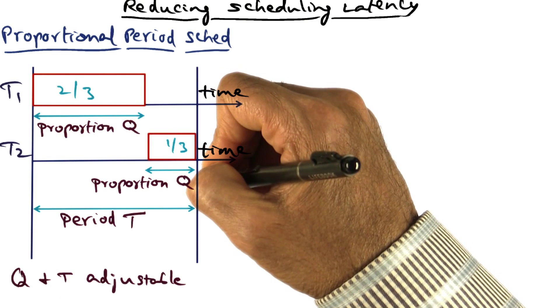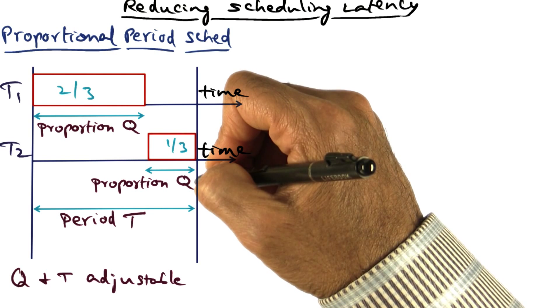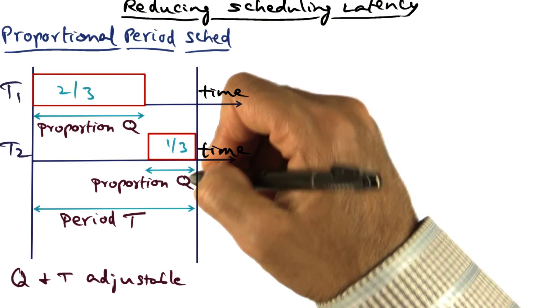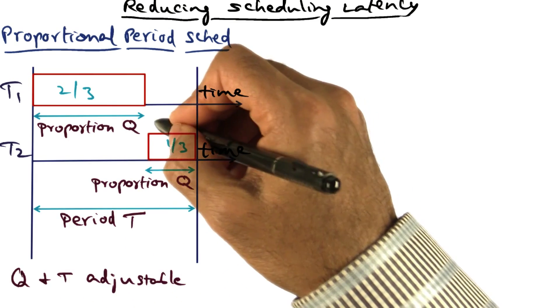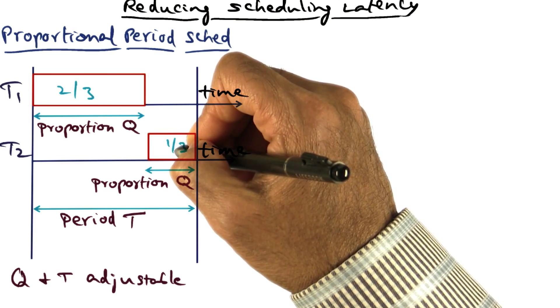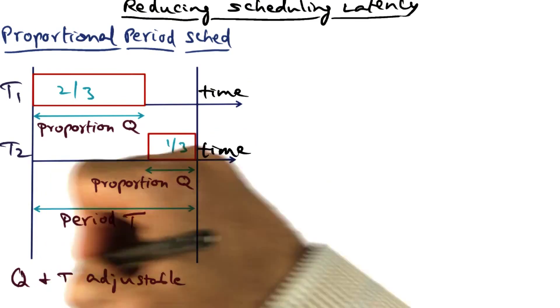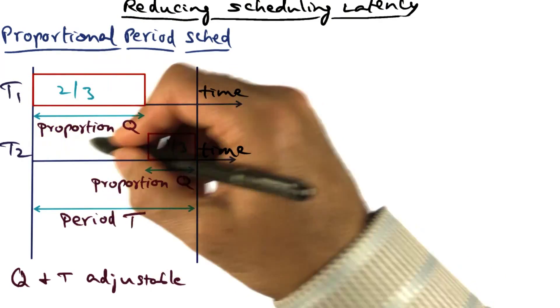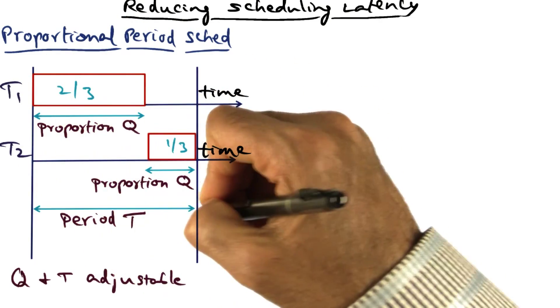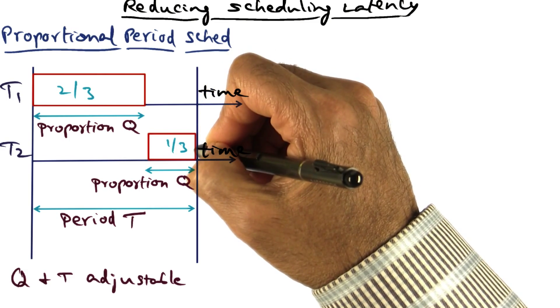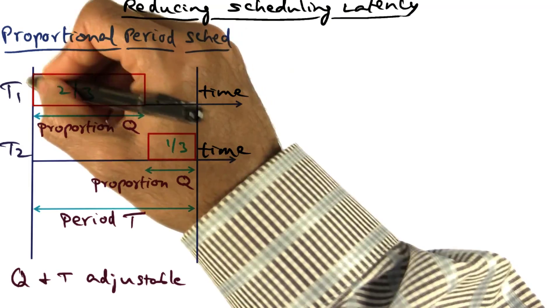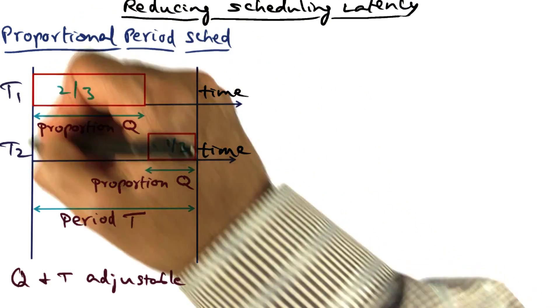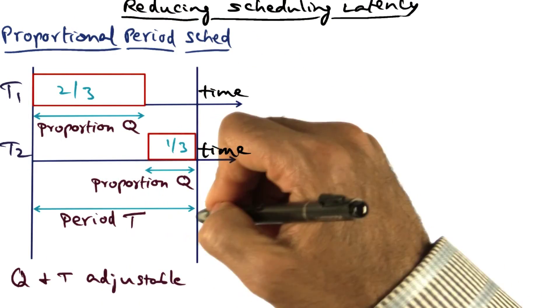T is a time window, a time quantum that is exposed to an application. And the application can say within the time quantum T, I need a certain proportion of that time for my task. So T1 might say that in any time T, I need two-thirds of the time to be devoted to my task. And if another task T2 says, in any time period T, I need one-third of the CPU to be devoted to my task, then these two requests can obviously be satisfied by TS Linux because the two add to the periodicity of scheduling T.